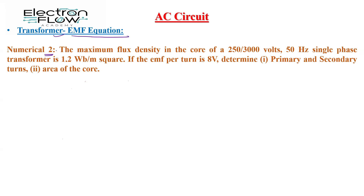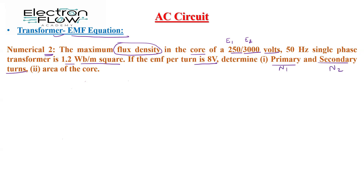The question is given as follows. The maximum flux density in the core of a 250 by 3000 volts — that means primary induced voltage E1 is 250 volts and secondary induced EMF E2 is 3000 volts — 50 Hz single-phase transformer is 1.2 Weber per meter square. If the EMF per turn is 8 volts, then determine the primary and secondary turns N1 and N2, and the area of the core.